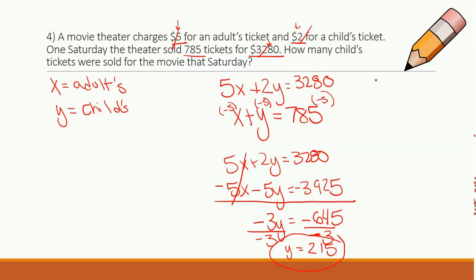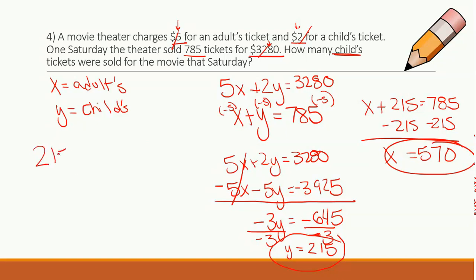Now let's find out how many adult tickets I also sold. So x plus 215 equals 785. Let's subtract 215. x equals 570. They want to know about children tickets. So I have 215 child's tickets were sold.